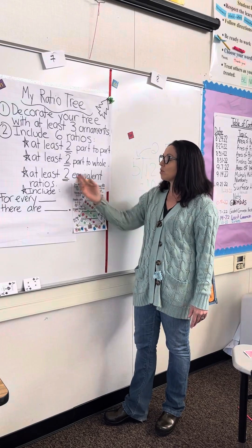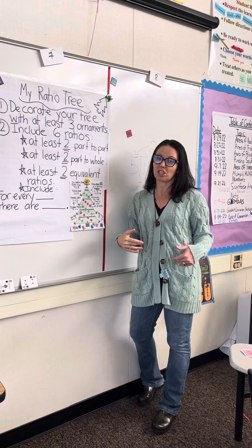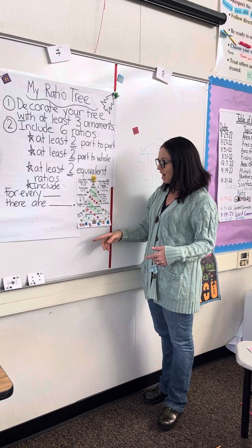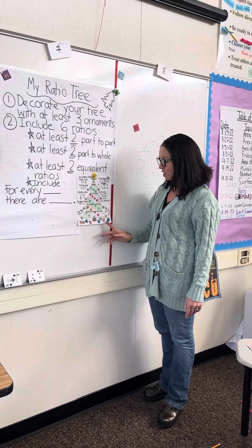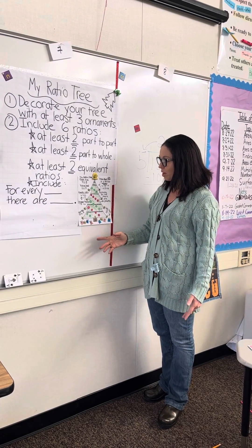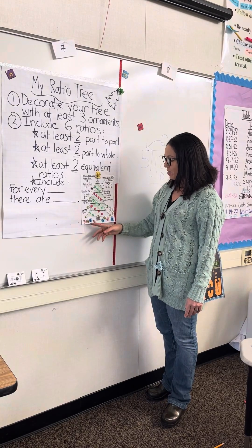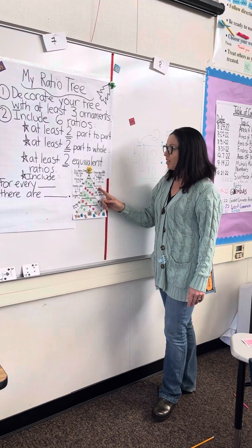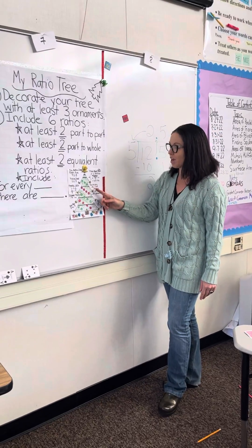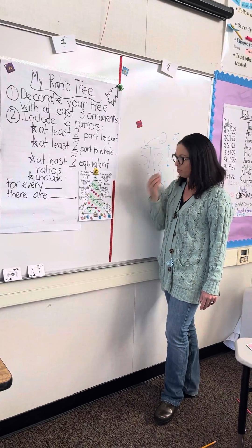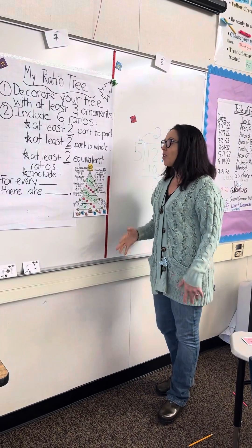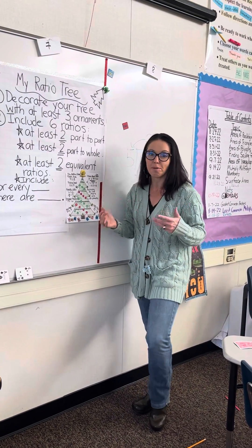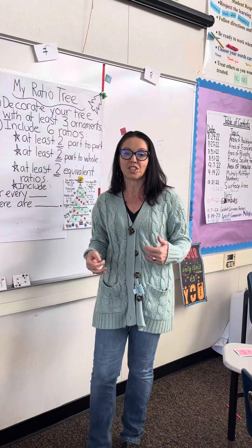Two of them need to have equivalent ratios. In this example, for three cats there are six presents; for two cats, four presents — there are three presents for every one cat. We also want them to use that language: 'for every blank, there are blank.' So a great fun activity — you're working with ratios, part-to-part, part-to-whole, and incorporating the ratio language.